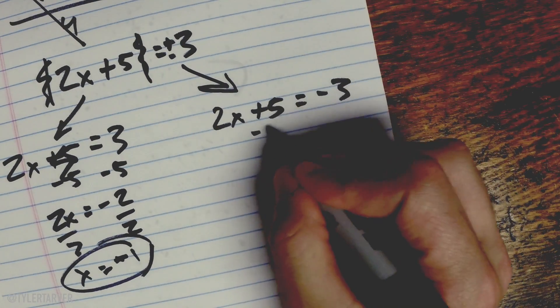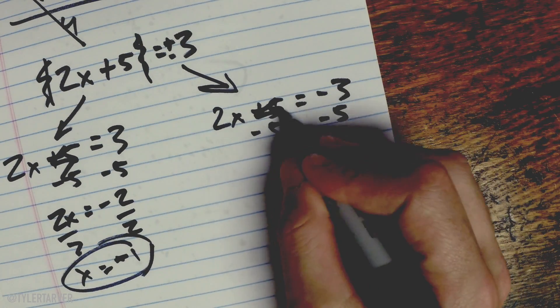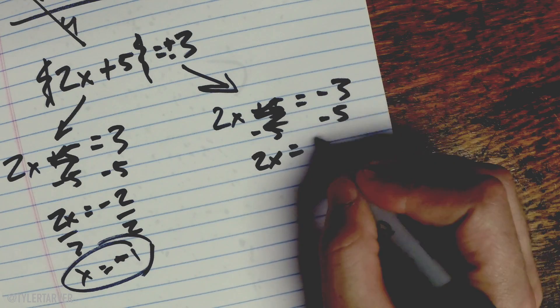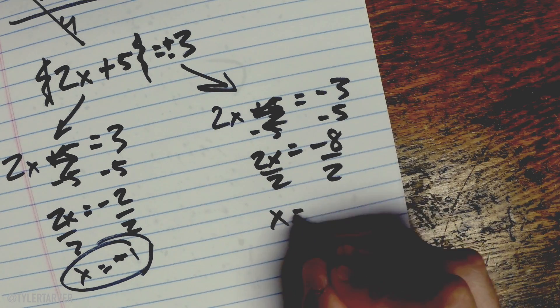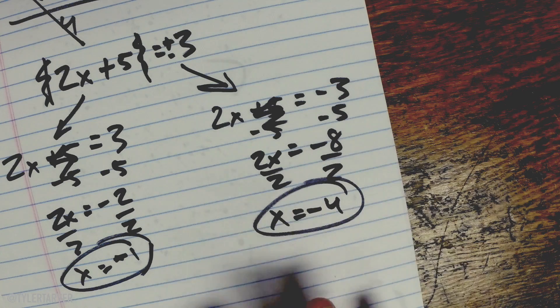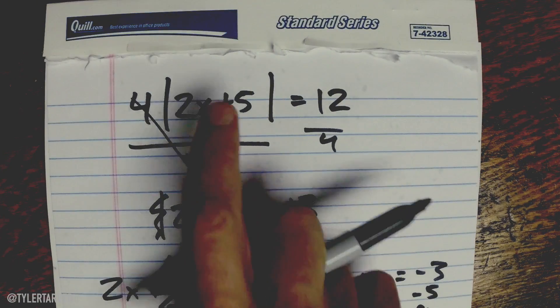And then we've got this one, so we subtract five from both sides, that cancels out, 2X equals negative 8, divide by 2, X equals negative 4.